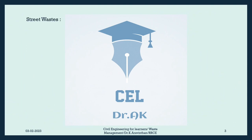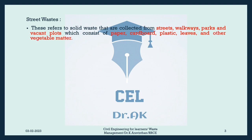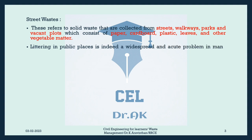Street Wastes: These refer to solid waste that are collected from streets, walkways, parks and vacant plots, which consist of paper, cardboard, plastic, leaves, and other vegetable matter. Littering in public places is indeed a widespread and acute problem in many countries. Solid waste management must address this menace appropriately.